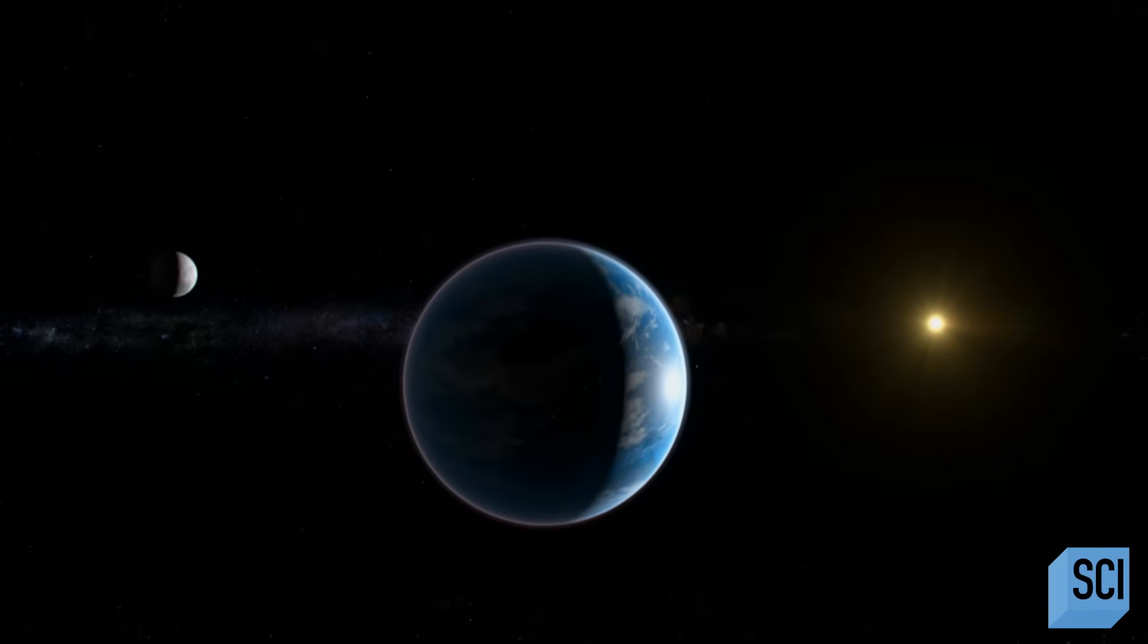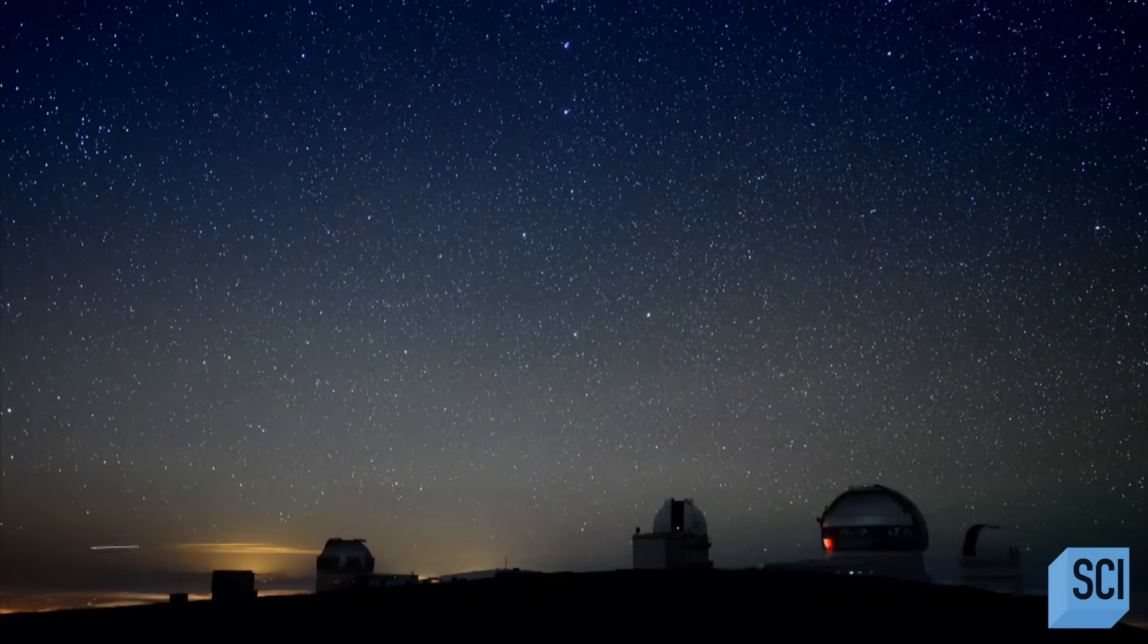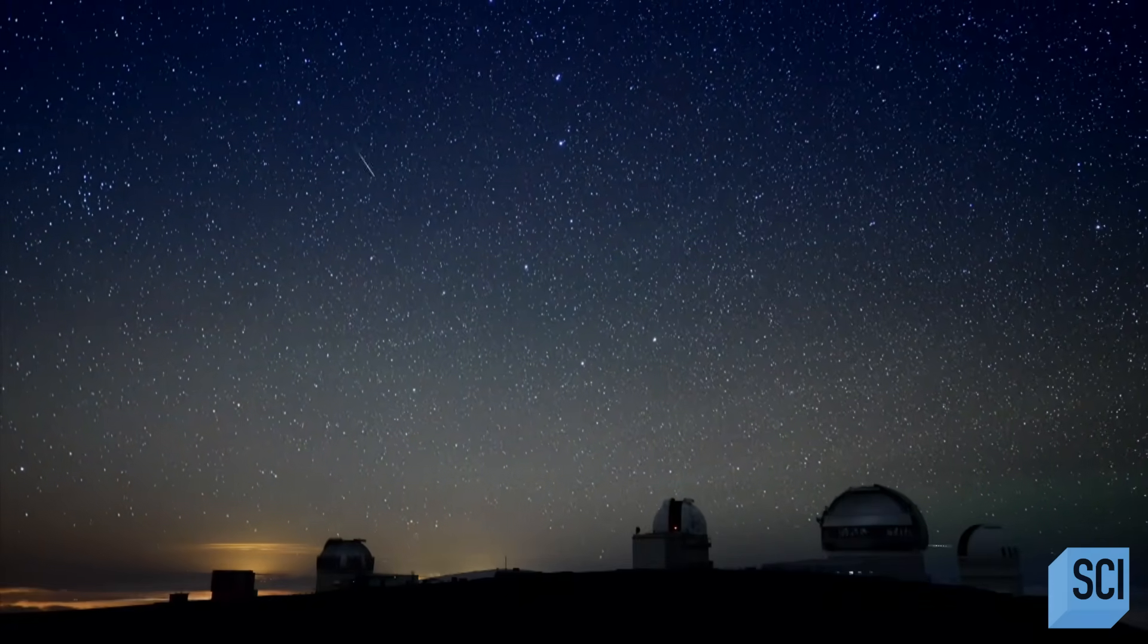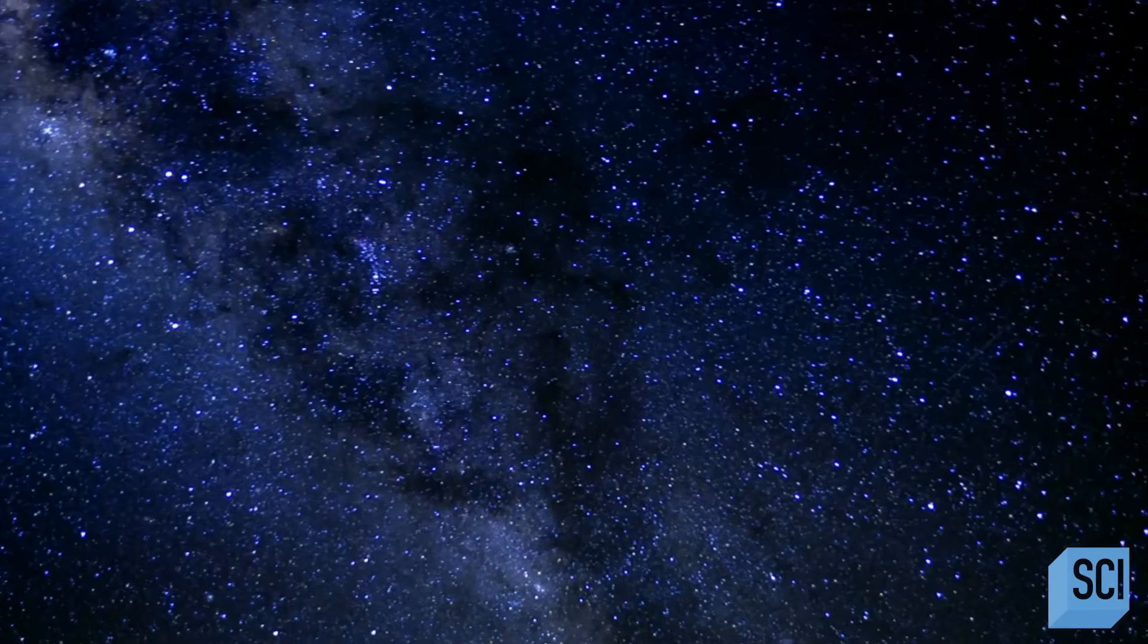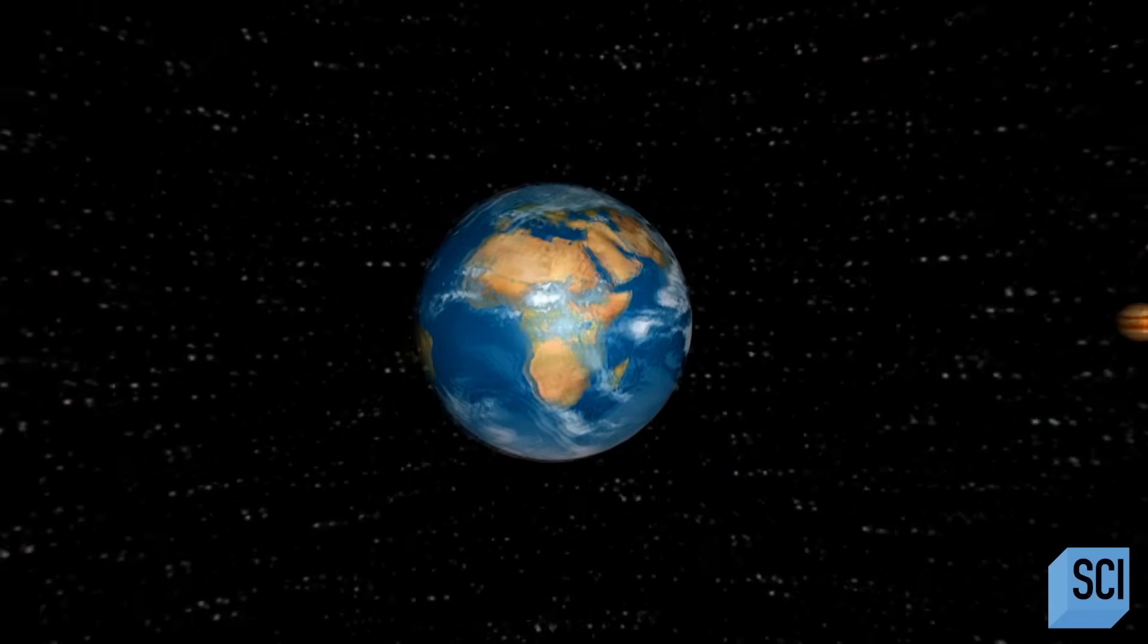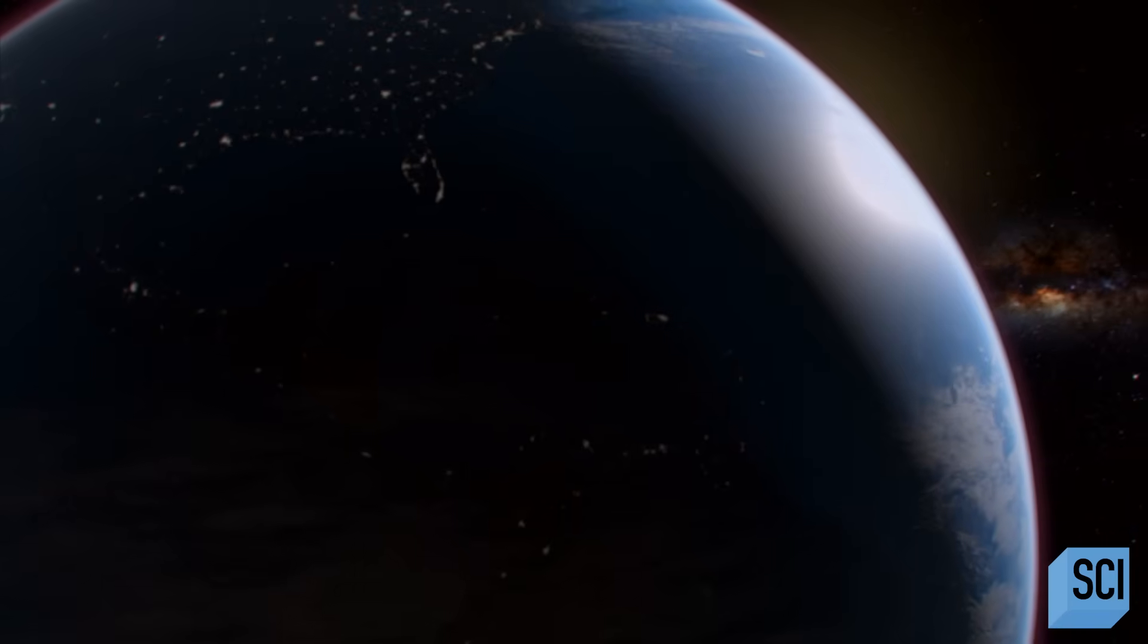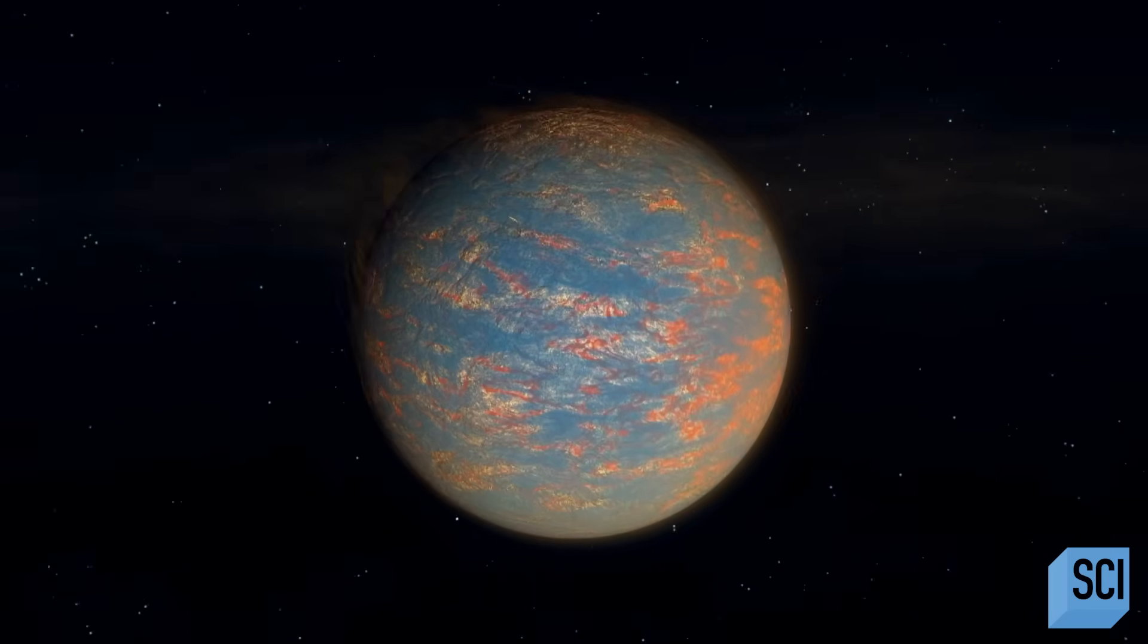But how many other worlds just like it are out there? Scientists look to distant stars hoping to find similar warm, wet planets. What they find is shocking. In the region where the Earth sits in our solar system, astronomers find a very different type of planet.